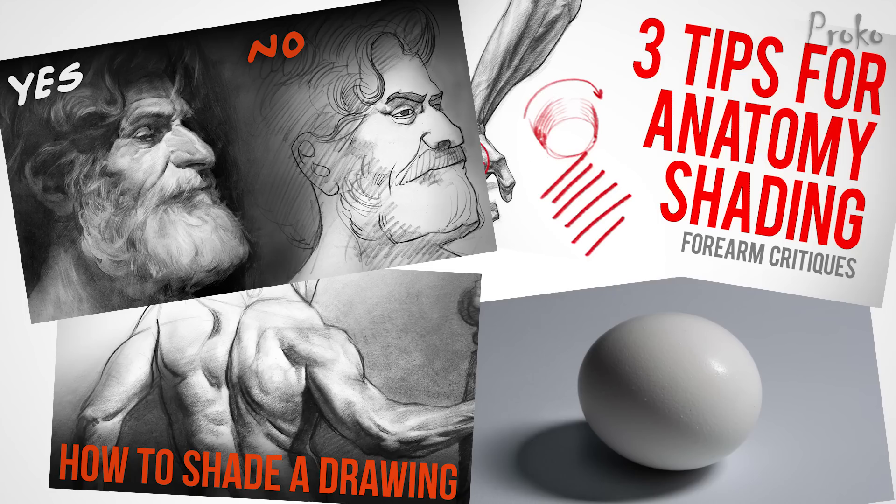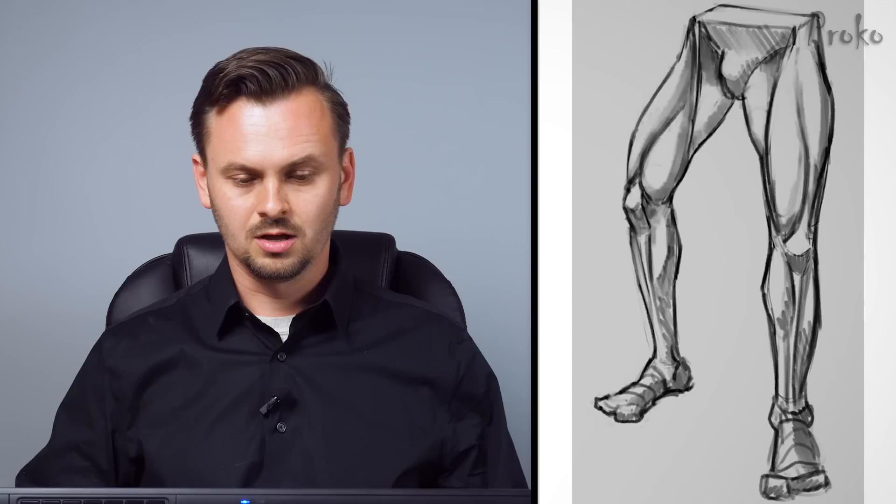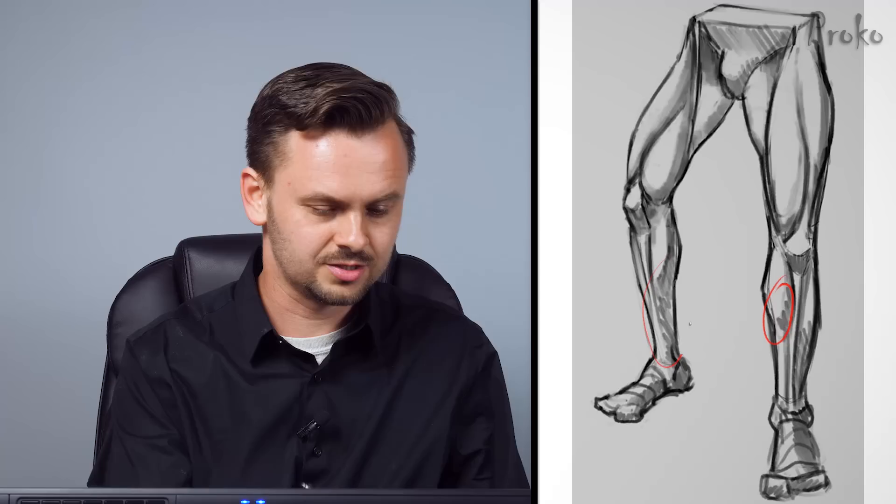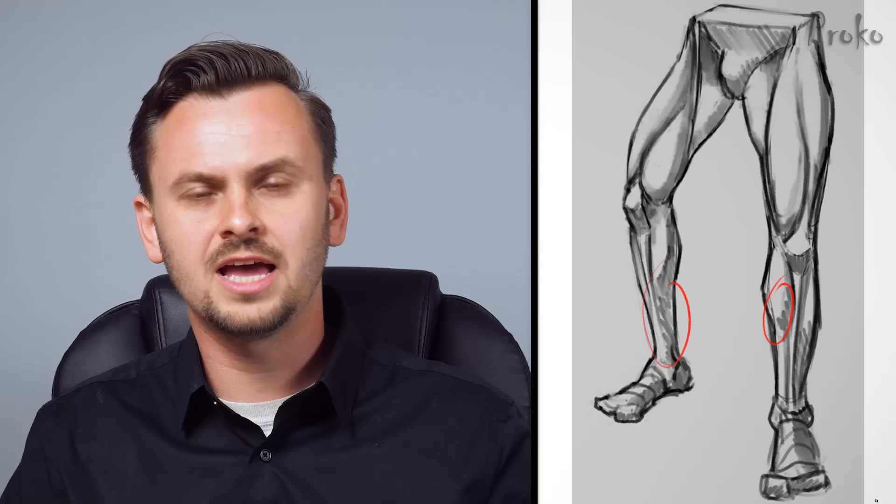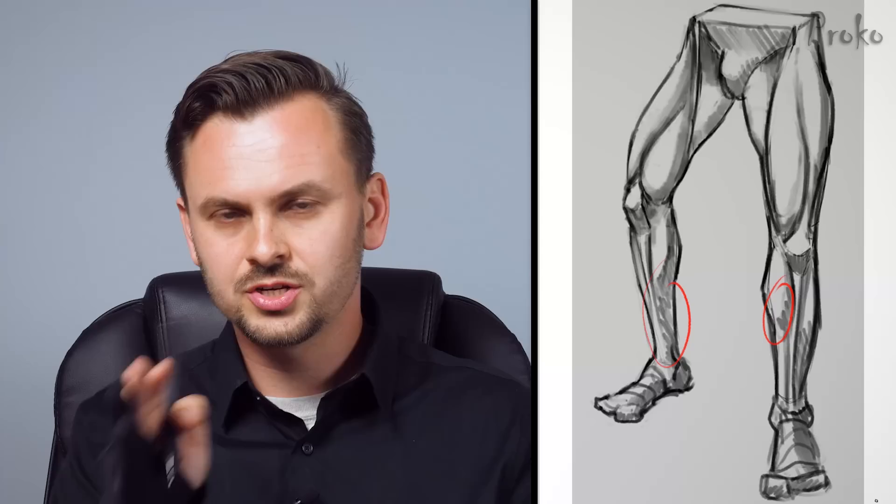I have many lessons on shading. If you go to YouTube and type in Proko shading or lighting and form, you'll find a bunch of videos. But generally, I feel like your shading problems are kind of just sloppy. You're throwing in a lot of tone — look at this area, it's just four lines, and look at this — bunch of squiggles.